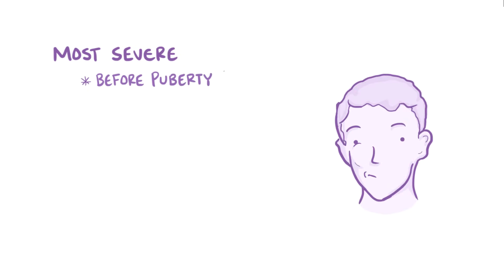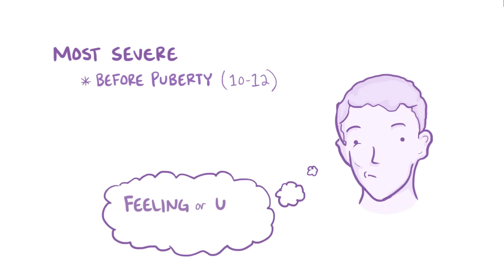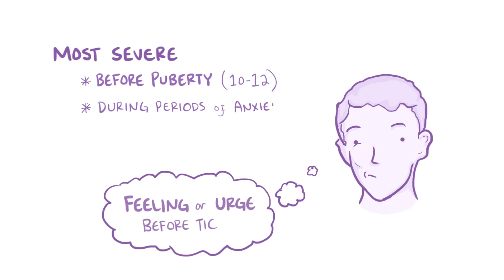Tic disorders are often most severe before puberty, between the ages of 10 and 12, and usually decrease in severity afterwards. Sometimes individuals might notice a specific feeling or urge that happens before the onset of a tic, like an itch before reaching to scratch. Tics also tend to become more common or more severe during periods of anxiety, excitement, or exhaustion.